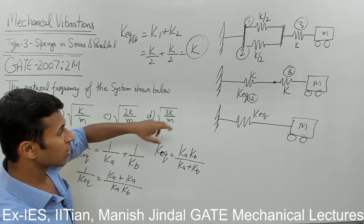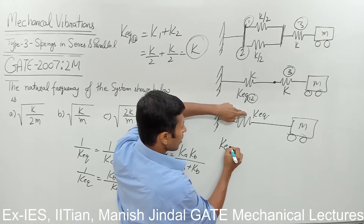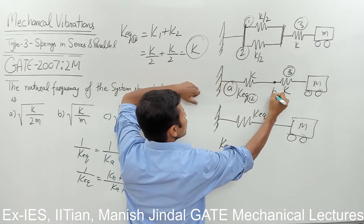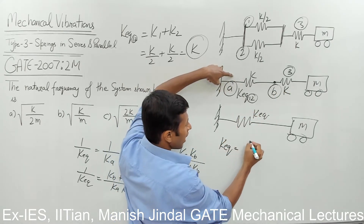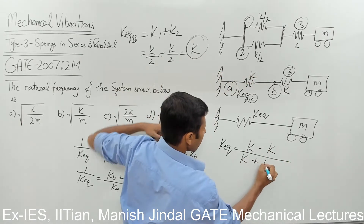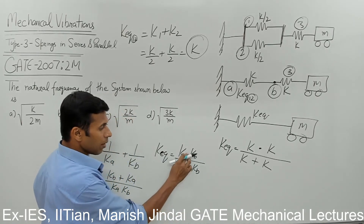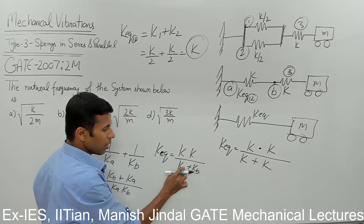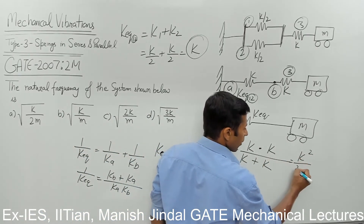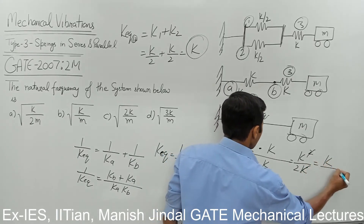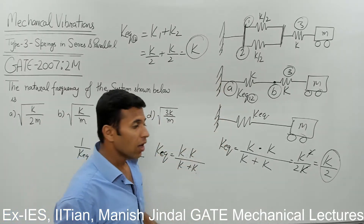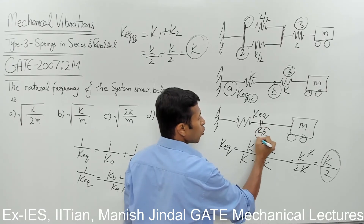Now let us put in the values. k-equivalent equals k-a multiplied by k-b — this is spring a, this is spring b — so k times k divided by k plus k. Both k-a and k-b equal k, so it comes out to be k-squared divided by 2k, which simplifies to k by 2. So the equivalent stiffness of the entire system is k/2.